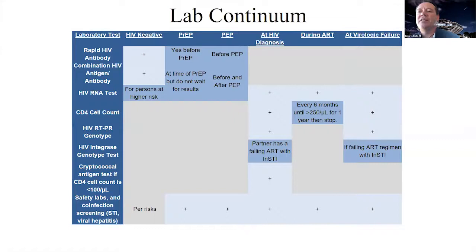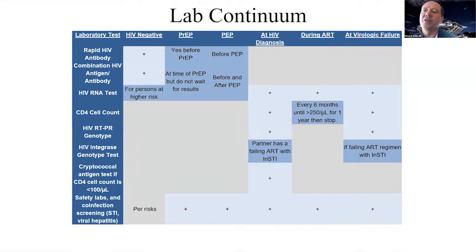Virologic failure is defined as two measures greater than 200 copies per mL. At that time, we recommend getting a CD4 count and genotype — RT protease. If they are on an integrase inhibitor, go ahead and get the integrase genotype, and then continue with STI screening.